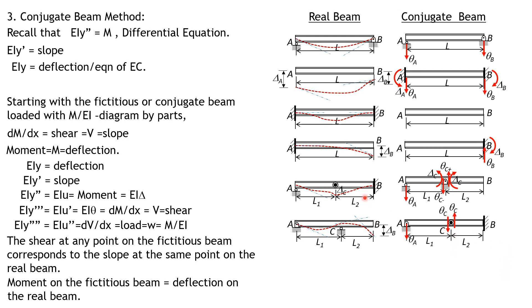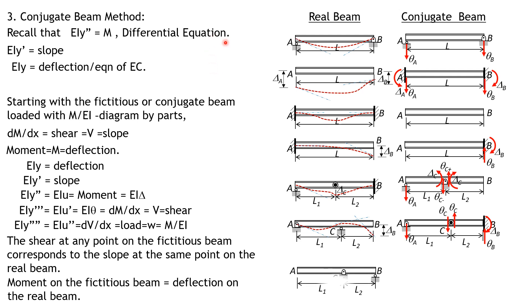Now for the sign convention: positive shear means that at the right section of a segment it acts downward, and if we consider the left segment it acts upward. That is the positive shear sign convention — at the right section it is downward, and at the left segment it is upward.